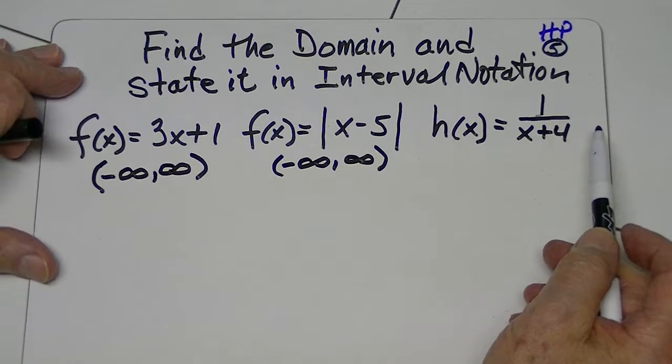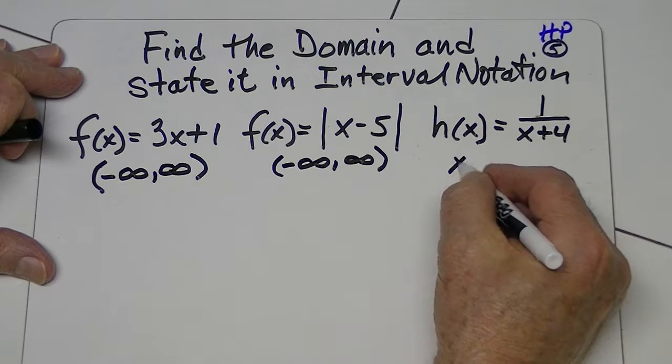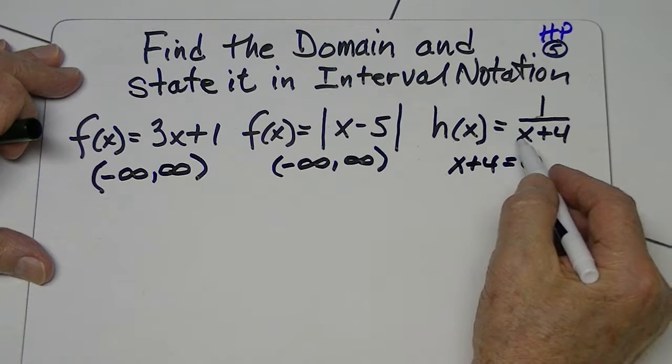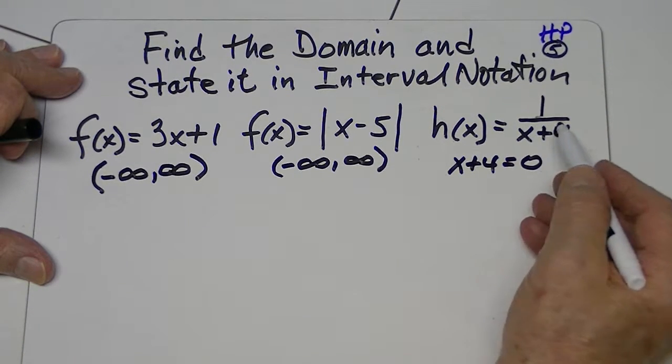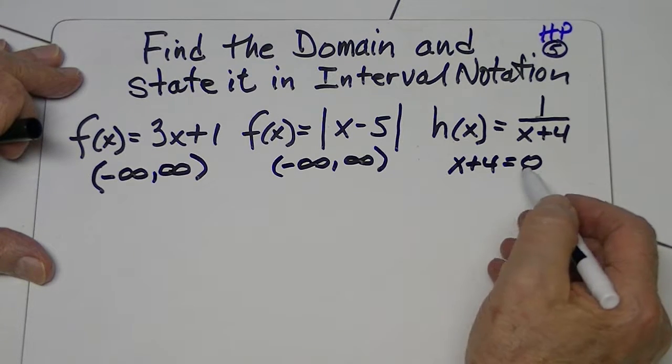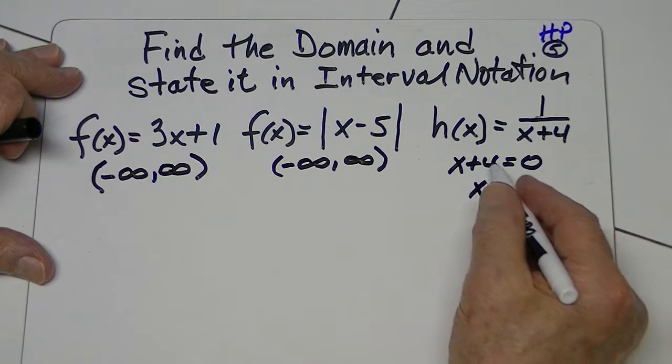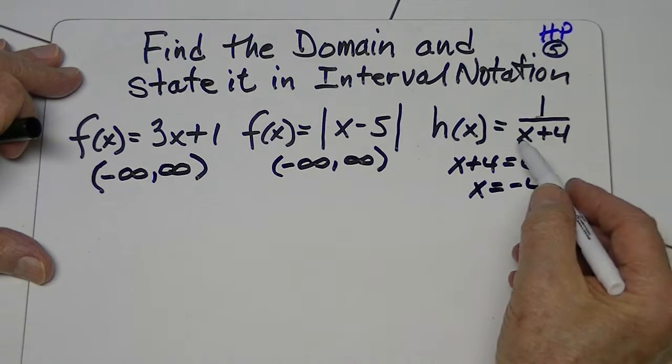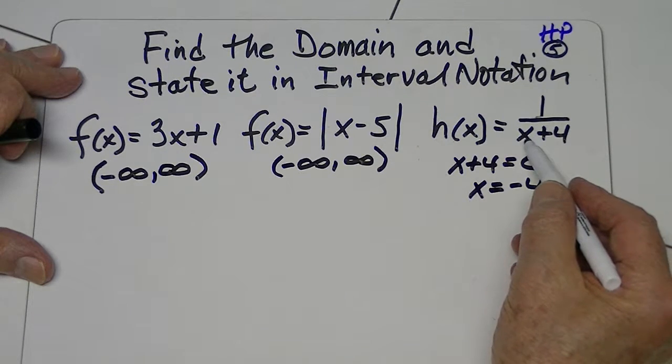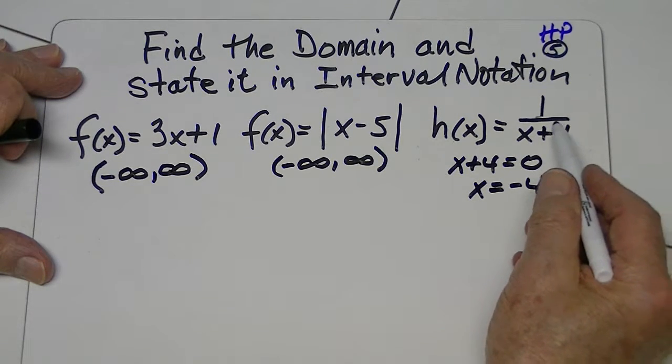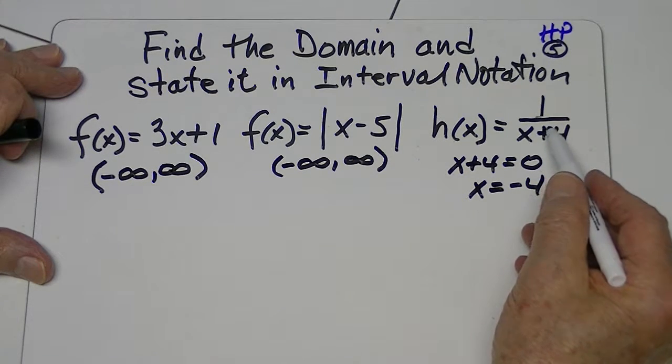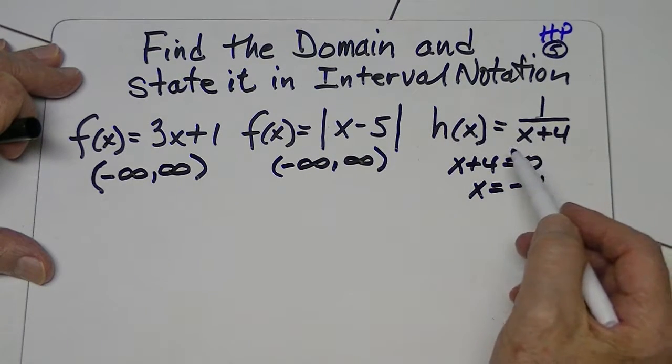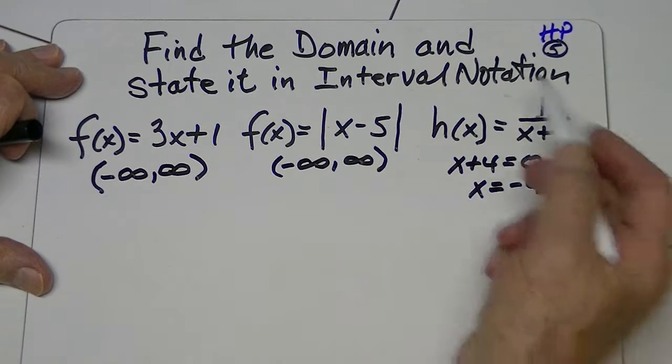So what's the strategy for doing that? Well, you just say x plus four equals zero. You're wondering what value of x in this denominator would make it a zero. And then you get x equals, just transpose that, a negative four. So if x were a negative four, negative four plus four would make the denominator a zero. So this value is not to be included in the domain.